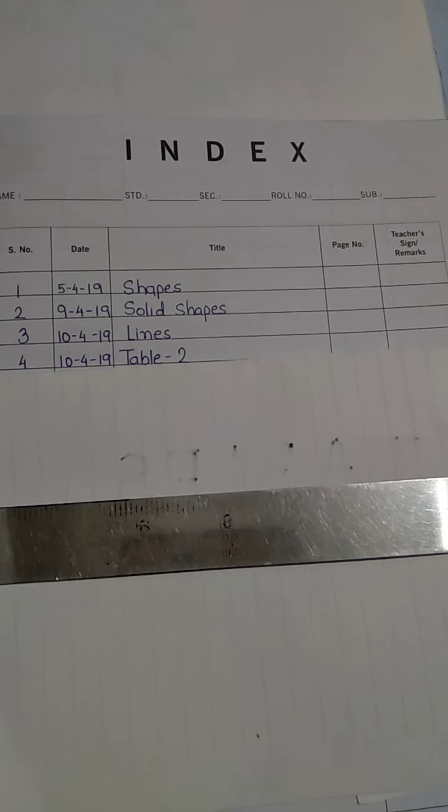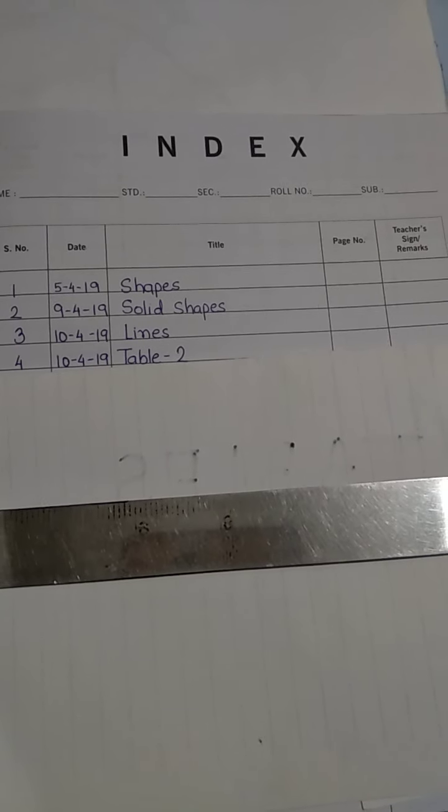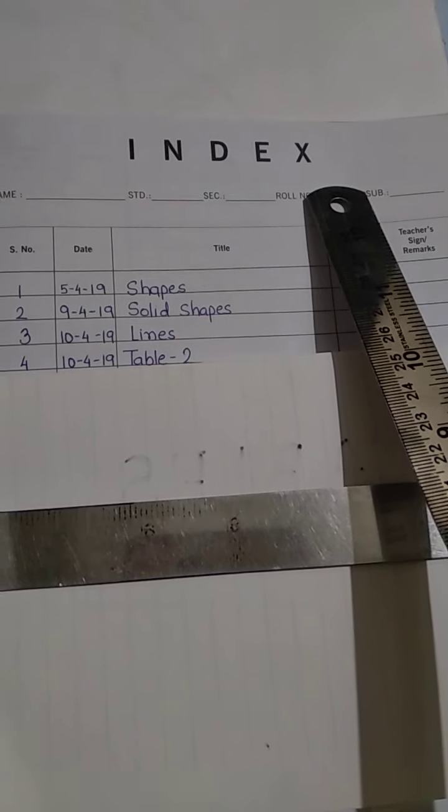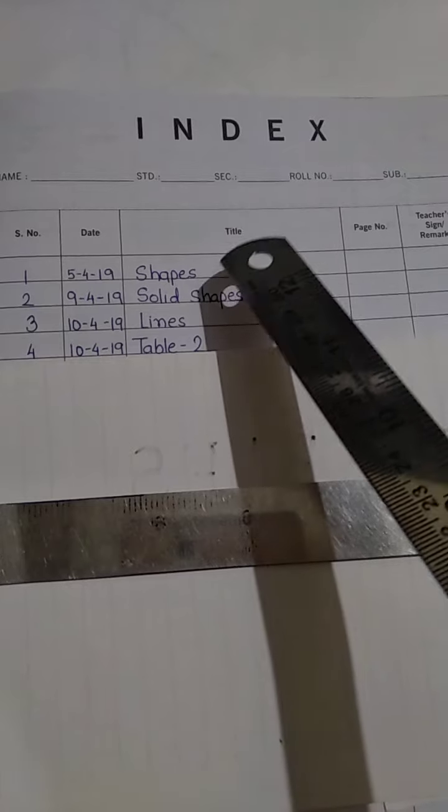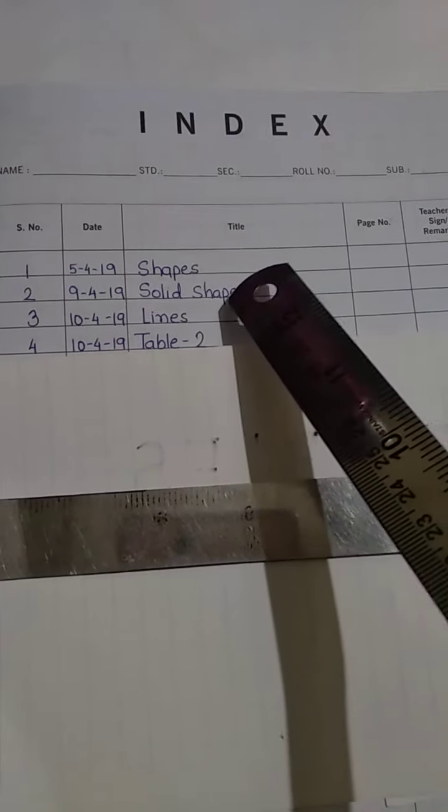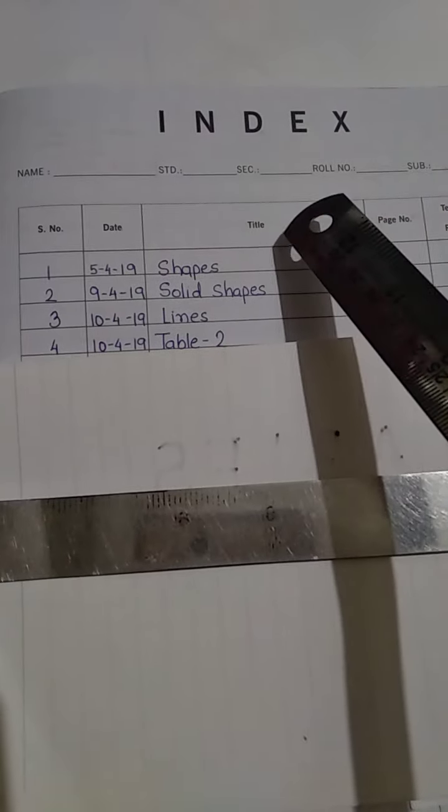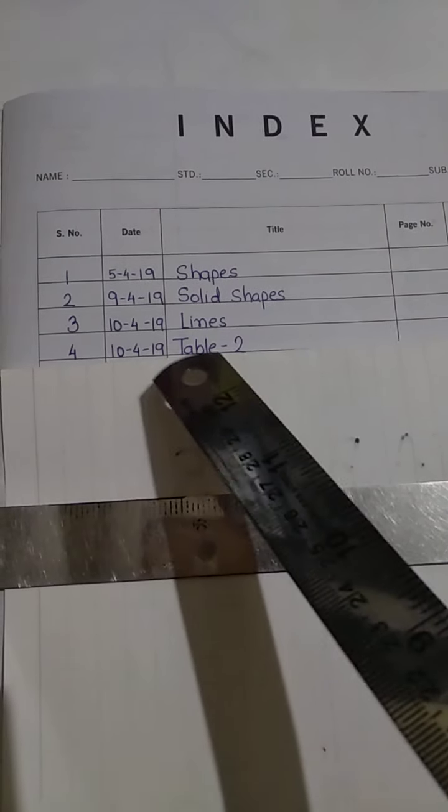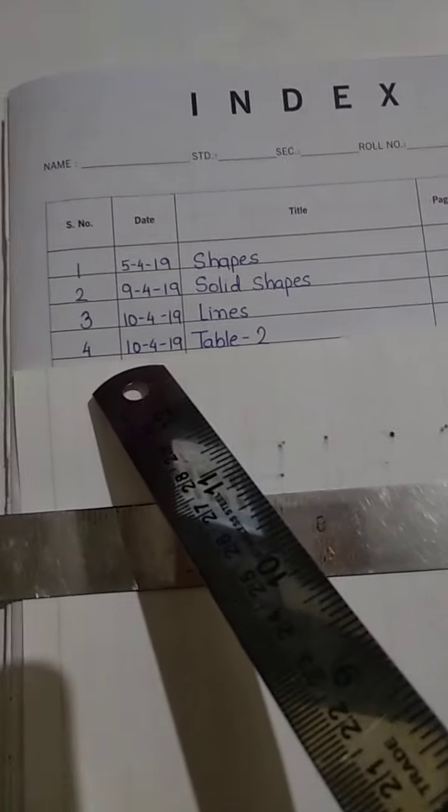Now children, when you start writing the table of 2, the first thing you have to do is write in the index page. I told you in a previous video how to write in the index page, and I hope you have completed your notes on shapes, solid shapes, and lines so far. This is what your index page should look like at the moment. Now put serial number 4, write table of 2, and also write the current date.